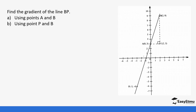Let's look at a few examples. You can be given a line or given points to draw a line and find the gradient — either way, as long as you have two points. In this question, we calculate the gradient of line BP using points A and B. Point A is (0, 3) and point B is (2, 9).